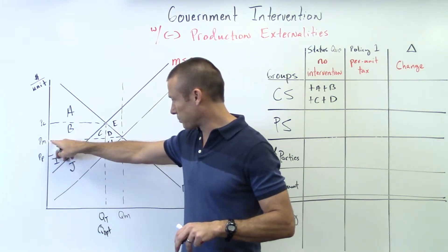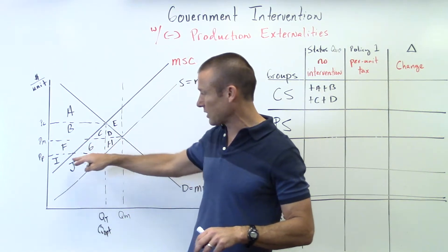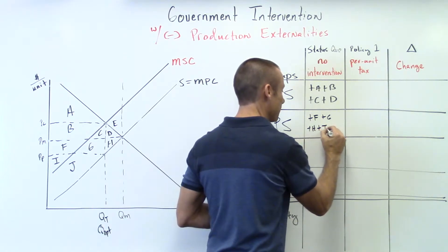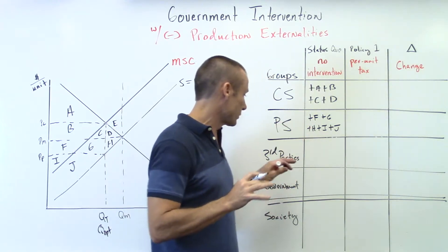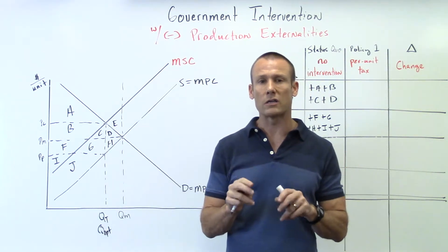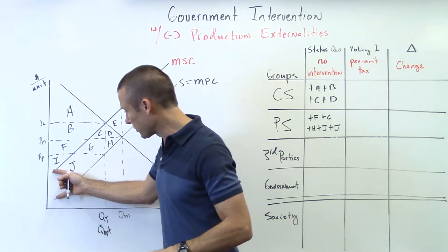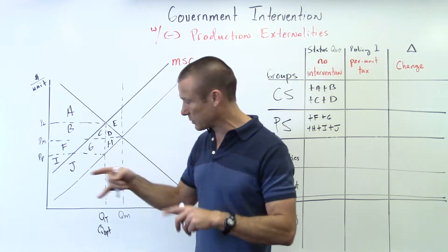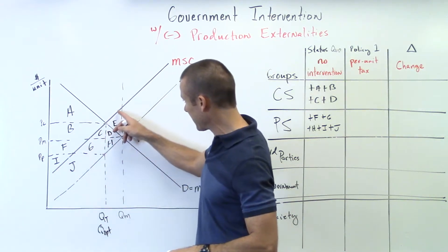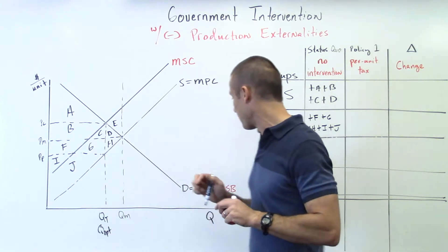Producer surplus with no intervention: price market is the price producer, down to the original supply curve — that gives us plus F, plus G, plus H, plus I, plus J. Now we've got third parties. Remember, this is a negative production externality, so third parties are being harmed — they're incurring a cost. We need to put a negative sign in front of these letters. Per unit produced, they're incurring this vertical distance between the MSC and MPC all the way to QM.